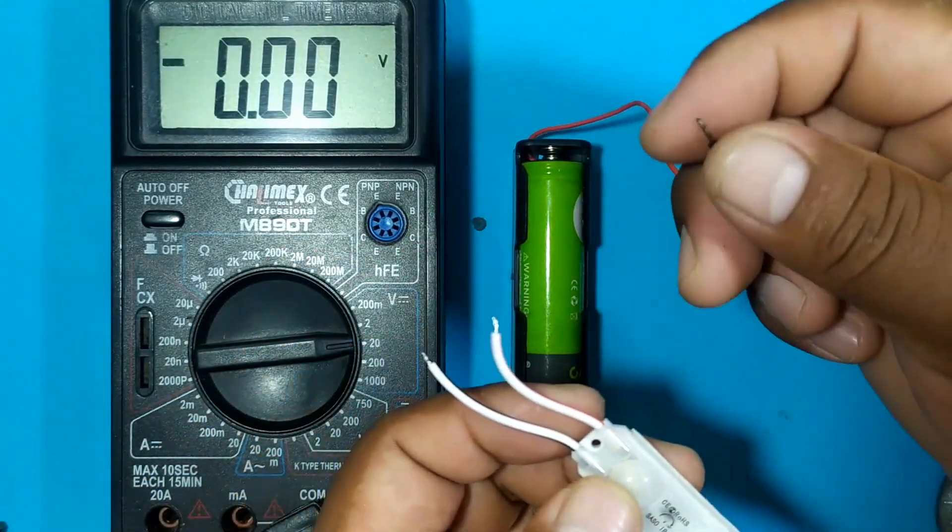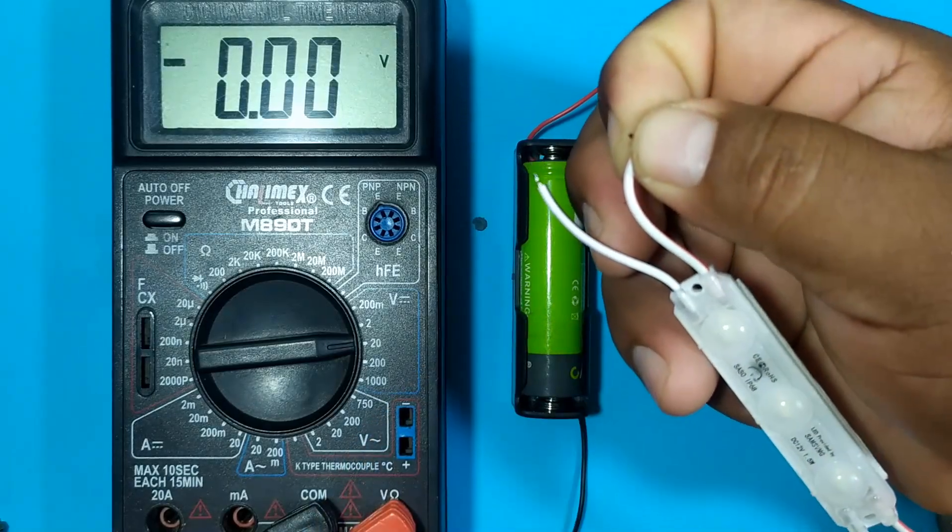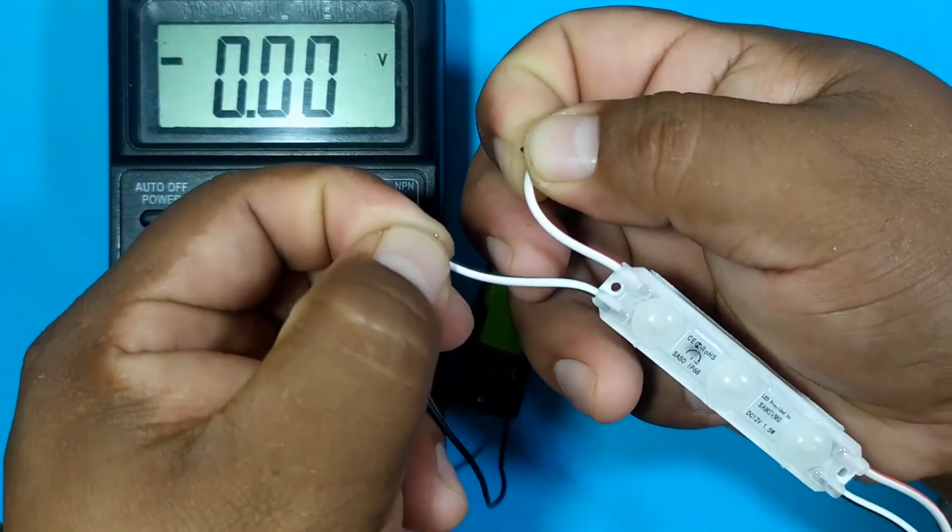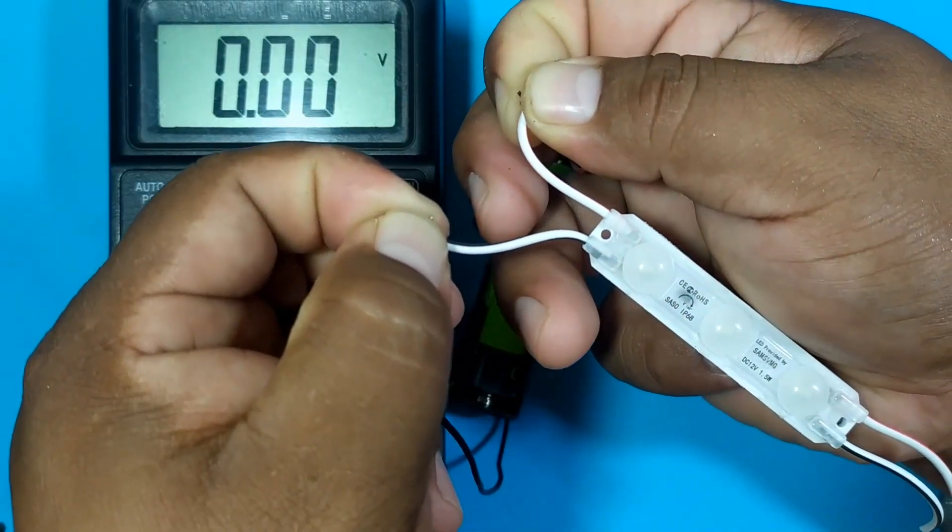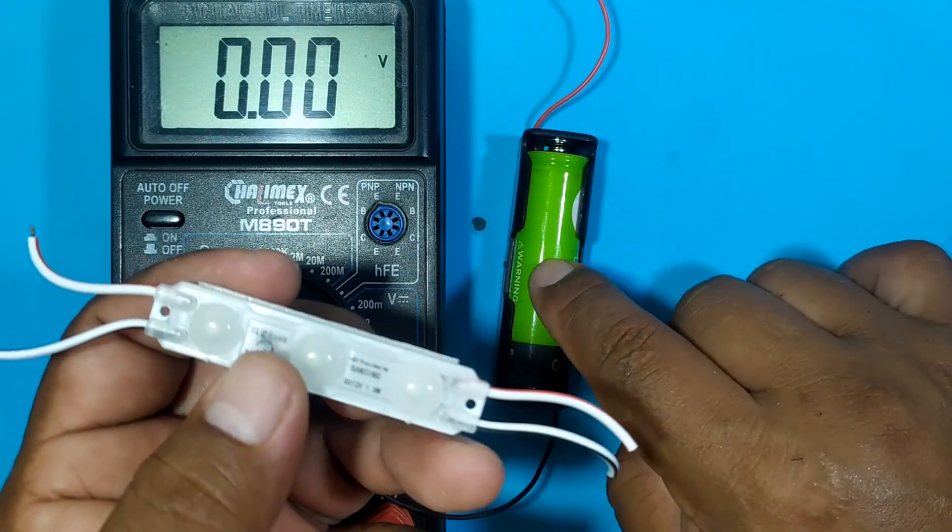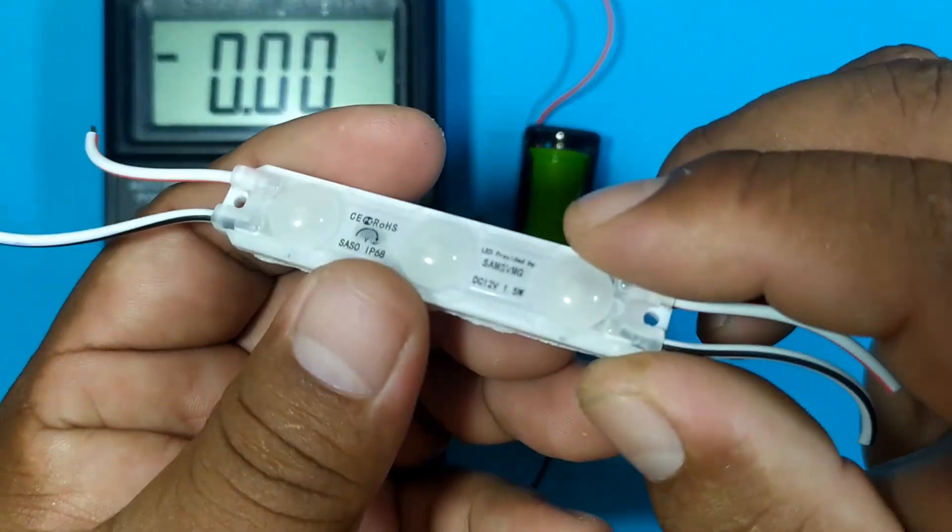We are going to connect the positive to the positive, and the negative to the negative, and it does not turn on. It means that we have to raise the battery voltage to the 12 volts indicated by the module.